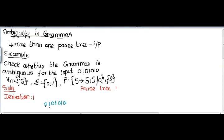In this lecture, I am going to explain about ambiguity in grammar. Ambiguity in grammar means if you are able to draw more than one parse tree for the given input, then the grammar is ambiguous.